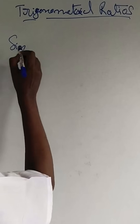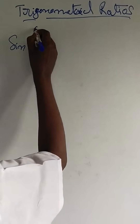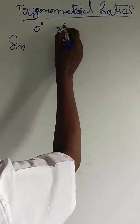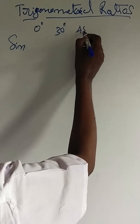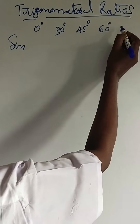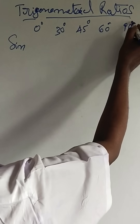Trigonometric ratios: sin 0 degree, 30 degree, 45 degree, 60 degree, 90 degree.